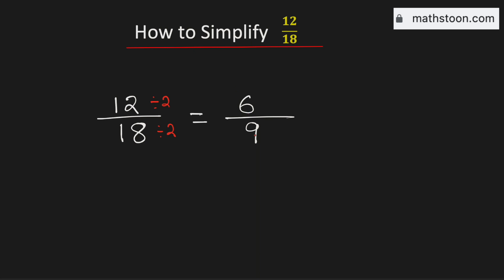Now again see that both are divisible by 3. So to simplify it further we will divide them by 3. And by doing so we will get 2 in the numerator and 3 in the denominator.